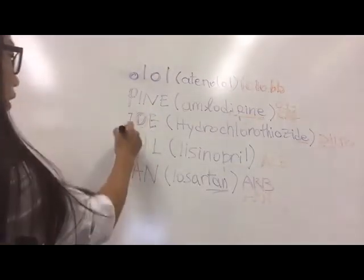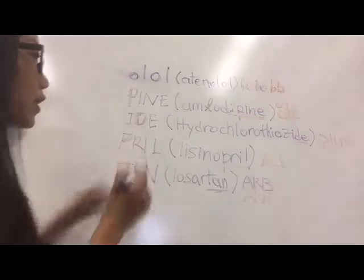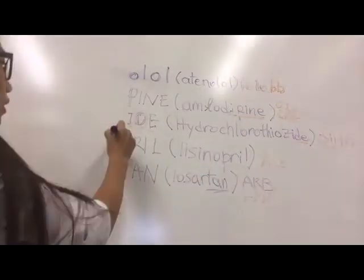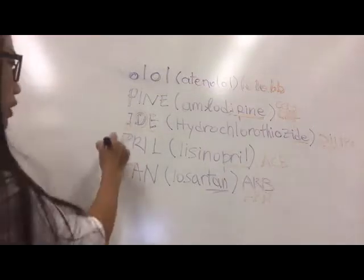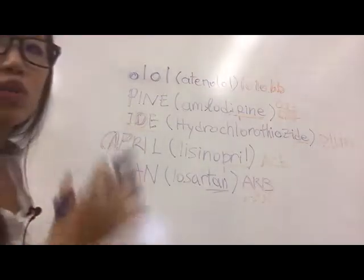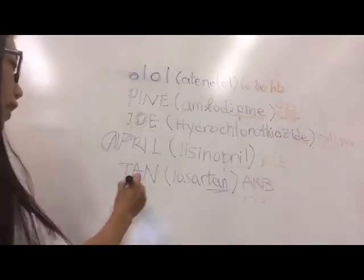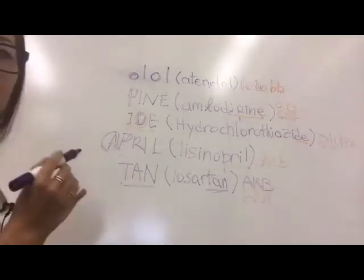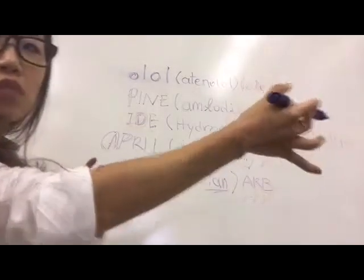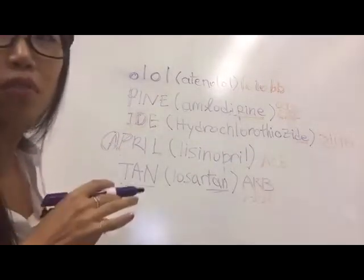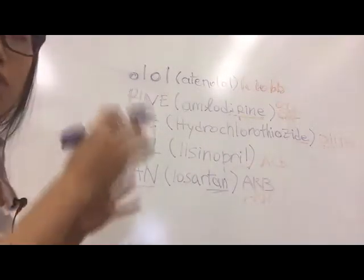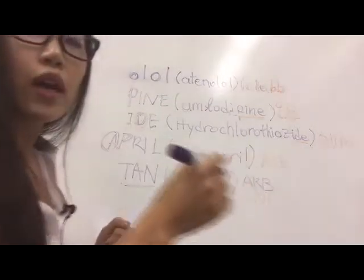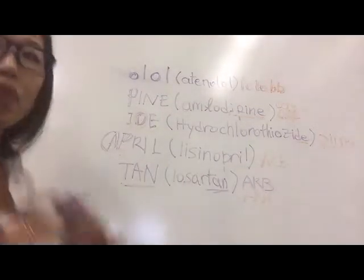'-Pril', this is an ACE inhibitor because I feel like there's a letter that's missing here, which was the 'A', gives me the clue of ACE. And then the last one, '-tan', okay now remember my arm is tan, or hopefully your arm is a little more tan than mine. And you think about 'arm' which is gonna translate into ARB. I hope this all makes sense to you.